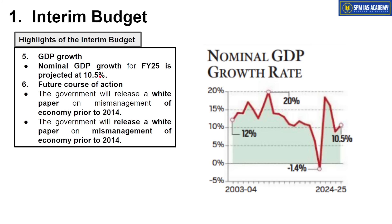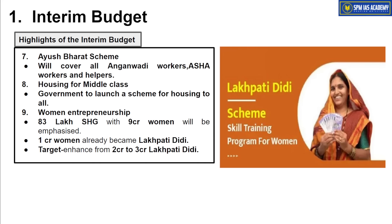This year's nominal GDP growth rate will be close to 10.5%. The government has also announced some future course of action: they will soon come up with a white paper discussing mismanagement of the economy prior to 2014. There will also be new schemes announced apart from Pradhan Mantri Awas Yojana Urban and Grameen, but these will happen only if the government wins again.